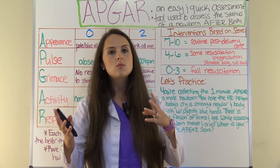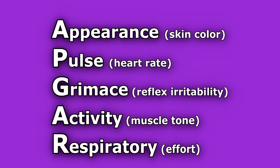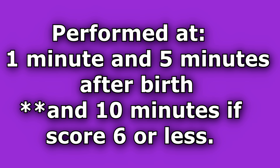APGAR is a mnemonic that stands for what you're going to be looking for. The A stands for appearance, which is the skin color. P stands for pulse, which is the heart rate. G stands for grimace, which is the reflex irritability. A stands for activity, which is muscle tone. R stands for respiratory effort. It's important to know that APGAR scoring is performed at one minute and five minutes after birth, and may be reassessed at 10 minutes if the score is six or less.